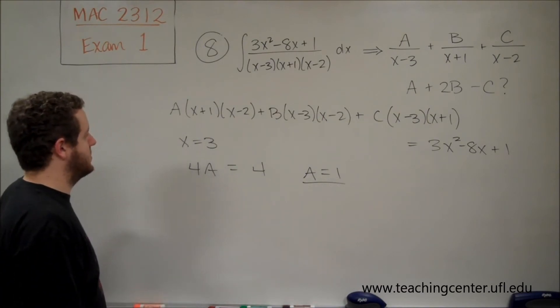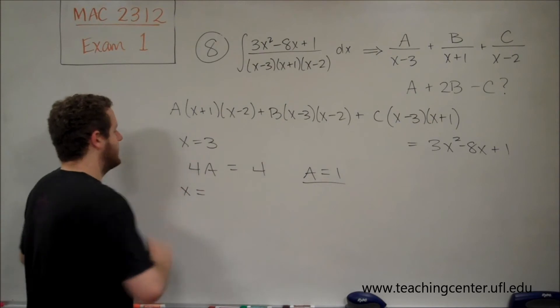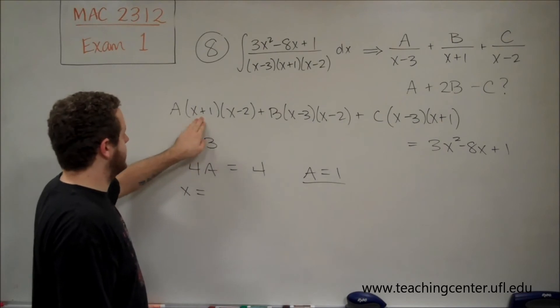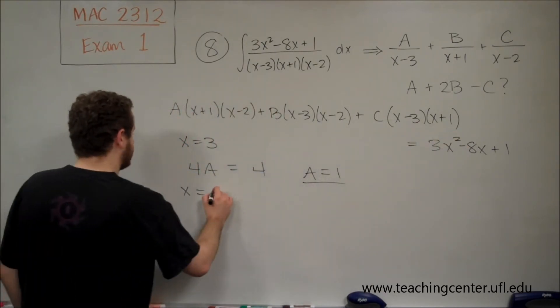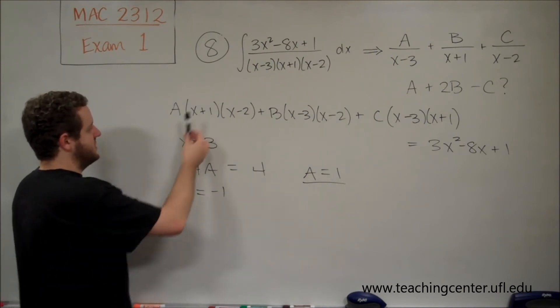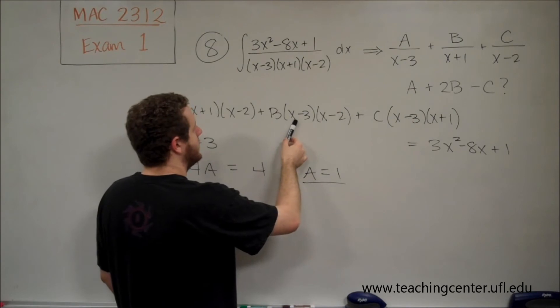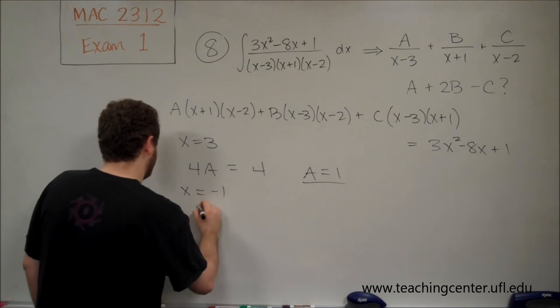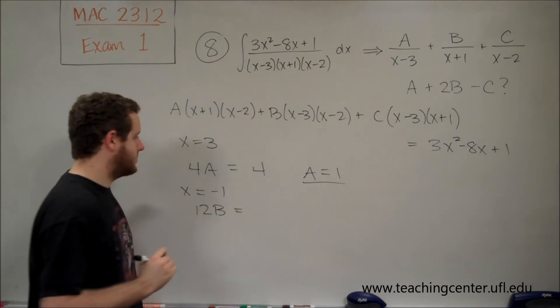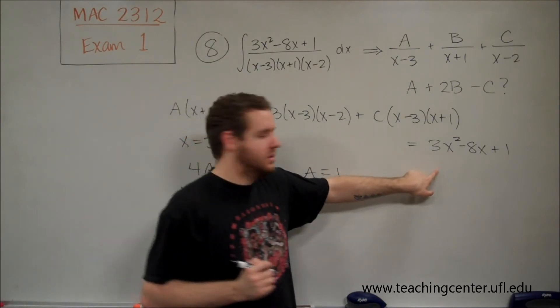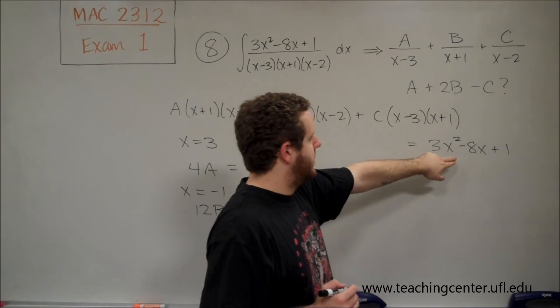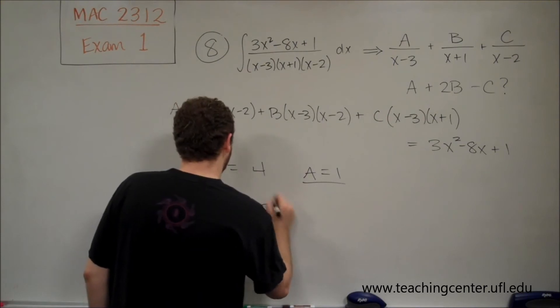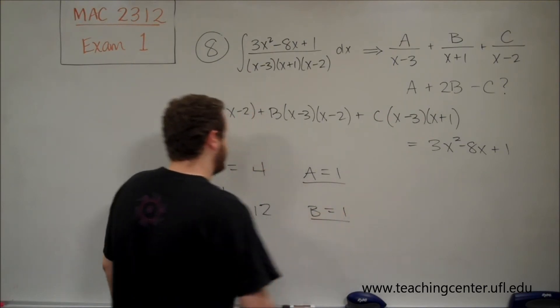So, we're going to do something similar for the next two as well. So, let's choose the number for x that would give us b by itself. So, we want x in this case to be negative 1, because that will get a and c both to go to zero. So, this term is zero. If we plug in negative 1 here, we're going to get -4 times -3. So, we're going to get 12b. And if we plug in -1 over here, we're going to get 3 + 8 + 1, which is 12. 12b equals 12. That tells us that b equals 1.